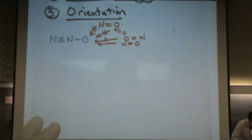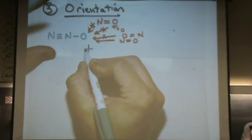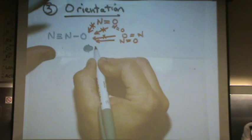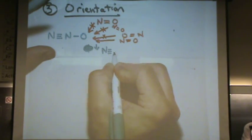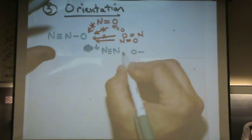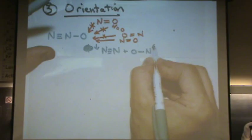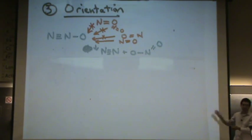And in that case, you'll end up with the following products: nitrogen triple bonded and plus NO2. So in the very bottom case, you'll actually yield products. So this is just one example of how orientation works.